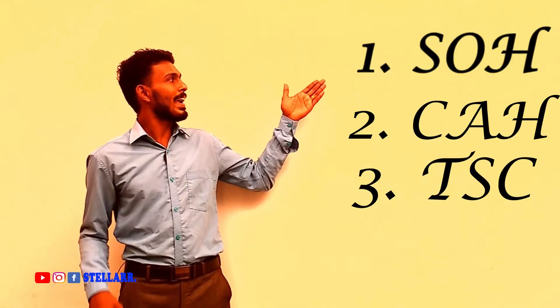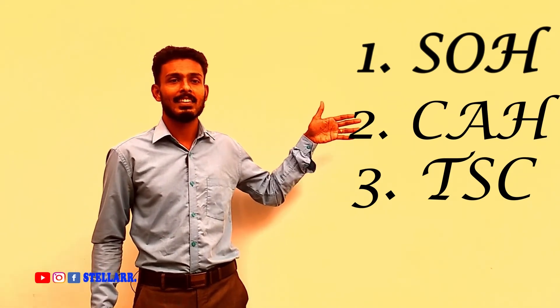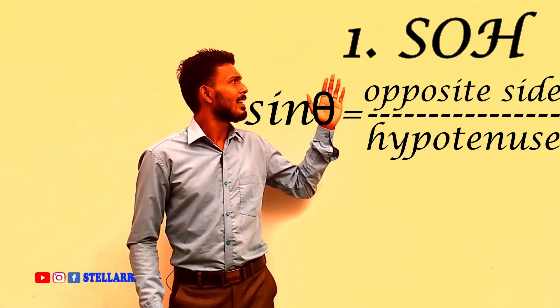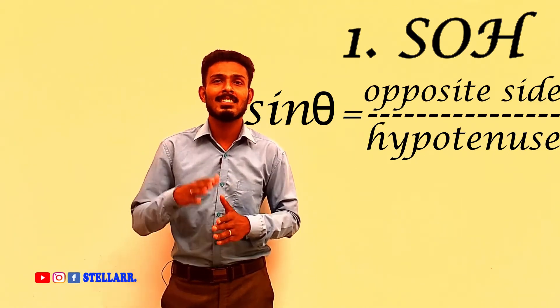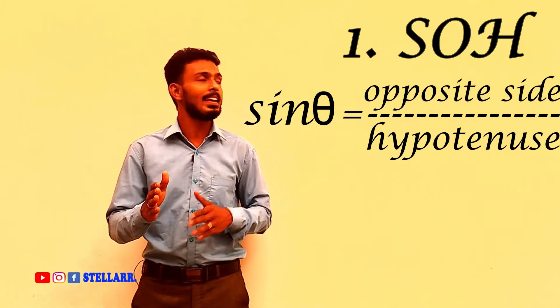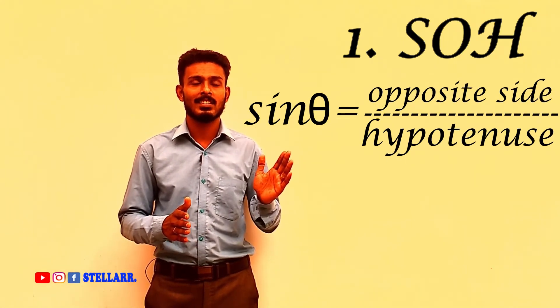Now, here comes the trick. Just remember three things: SOH, CAH, and TOA. That is, SOH. That is, sin theta. Sin theta is nothing but opposite side by hypotenuse. That is, SOH.